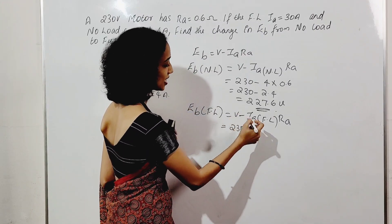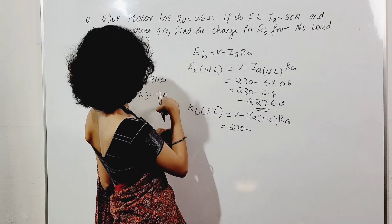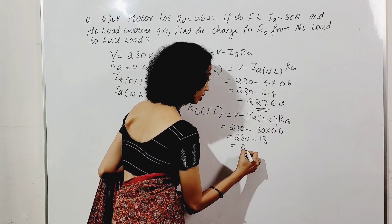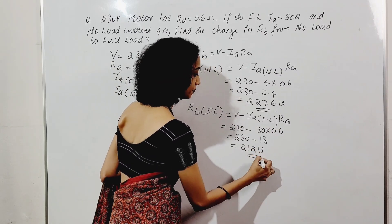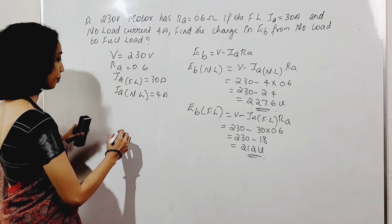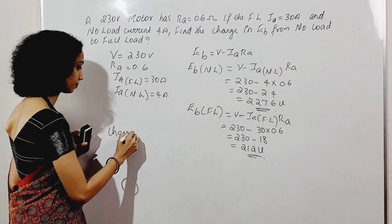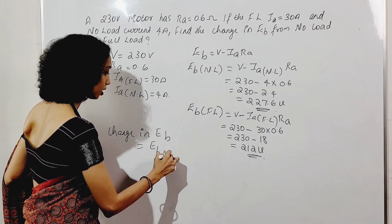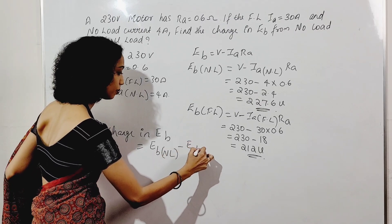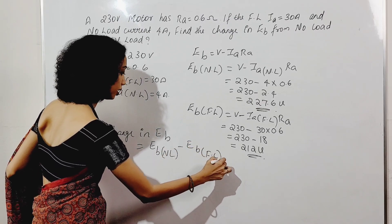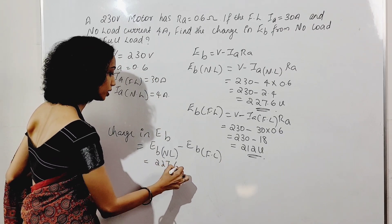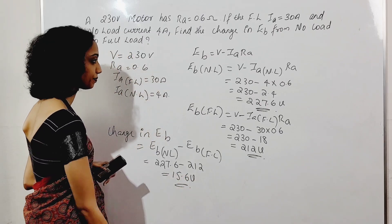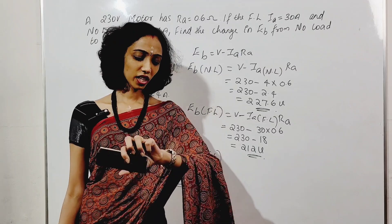At full load: EB full load equals 230 minus 30 into 0.6, which gives 230 minus 18, equal to 212 volts. Change in back EMF: EB no load minus EB full load equals 227.6 minus 212, which is equal to 15.6 volts.